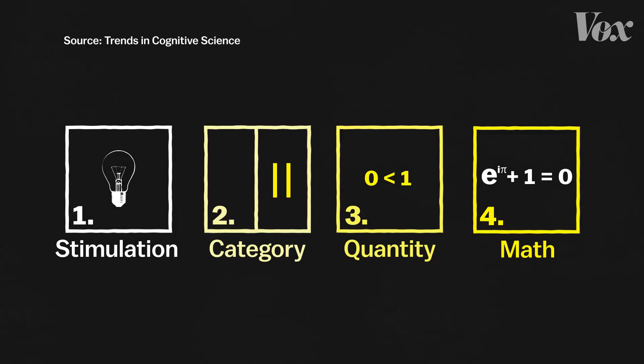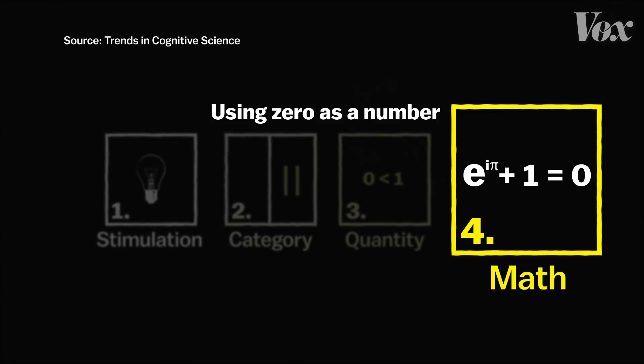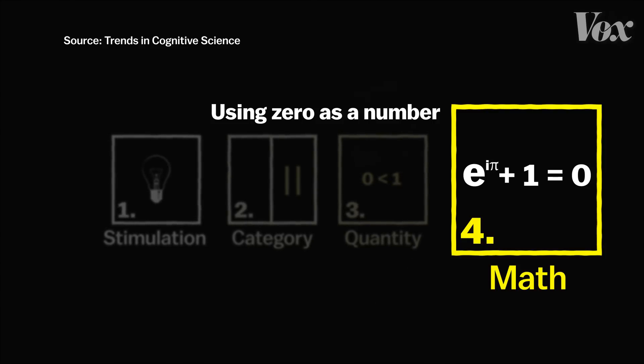Without understanding this concept, Nieder says humans can't use zero as a number, the fourth and final stage. But how the brain gets to that point is still unknown.